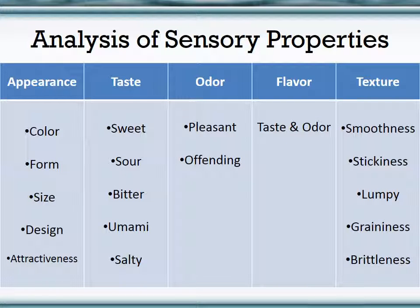Here's a more detailed explanation of sensory properties — the main sensory properties we evaluate when examining food. Appearance: what is the color, how does it look, what is the form, is there any special design, is it an attractive-looking food? Taste: again, taste just applies to the five main senses — sweet, sour, bitter, umami, and salty.